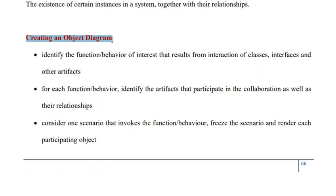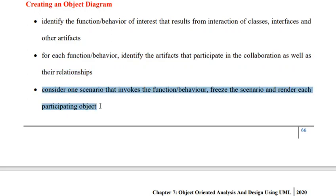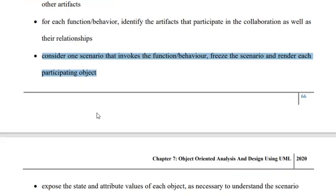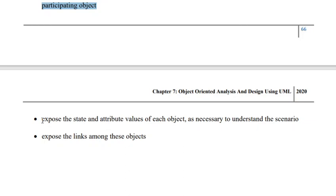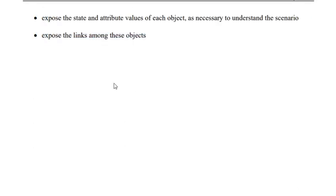We also learned about the steps in creation of an object diagram: identify the set of functionalities first; then for each functionality, identify the collaborating objects and the relationship. Once the collaborating objects for a given function have been identified, identify a scenario where the function is invoked. Freeze the scenario and render the participating objects, because every time the scenario is executed, the same set of objects will be participating. Then find all possible values the state variables pertaining to an object may attain, and expose the links among the objects. As an assignment, take an example and draw an object diagram.